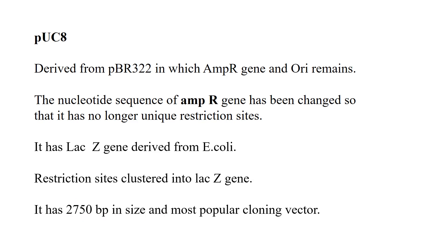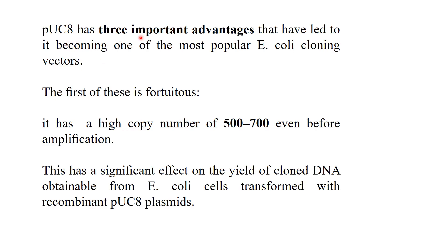pUC8 has three important advantages that have made it one of the most popular E. coli cloning vectors. The first advantage is its high copy number of 500 to 700 even before amplification, produced by mutation. This is a significant feature because it means a high yield of cloned DNA can be obtained from transformed E. coli cells.